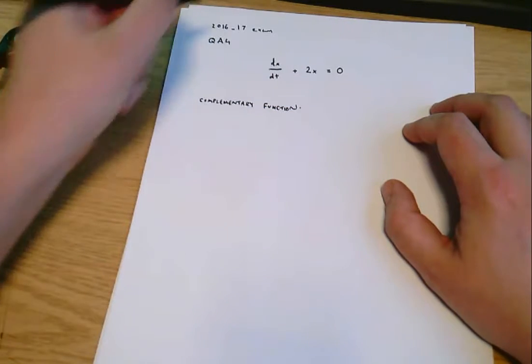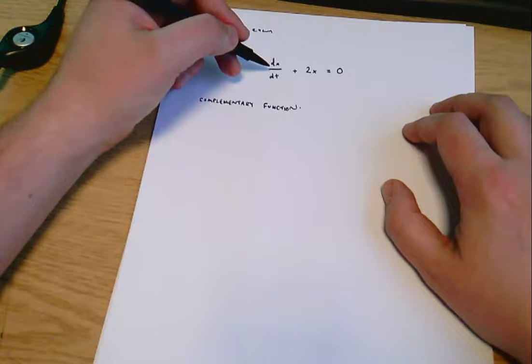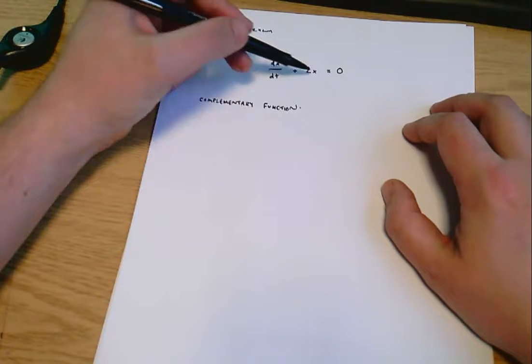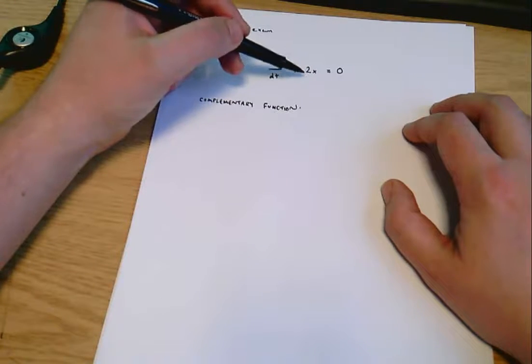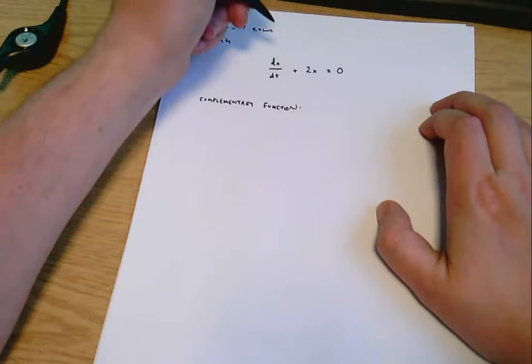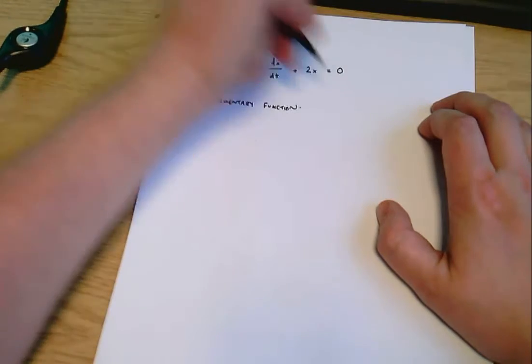And so what we said is we need something where when we differentiate it, it stays similar so that we can take the derivative, add it to two times the original function, and it's all going to cancel out. And things that stay similar when you differentiate them, the most standard one is an exponential.